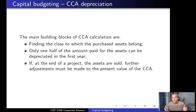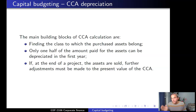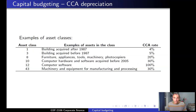Third, if at the end of the project the assets are sold, further adjustments must be made to the present value of the CCA. In some cases, assets could be sold at a profit — for example, a piece of land sold at a higher price than the purchasing price — in which case there are also tax consequences.